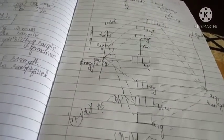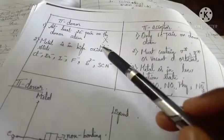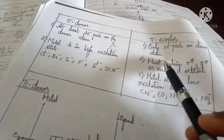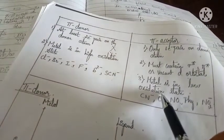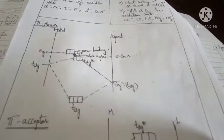Pi donor requires at least 2 electron pairs on the donor atom and has a low oxidation state. Pi acceptor has only 1 electron pair on the donor atom and has a high oxidation state. The energy level diagrams for pi acceptor were covered. This is all about Unit 1.